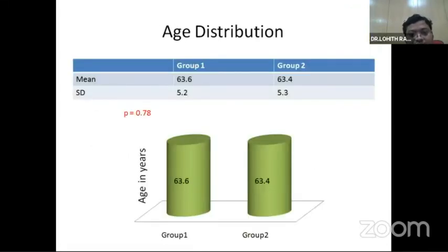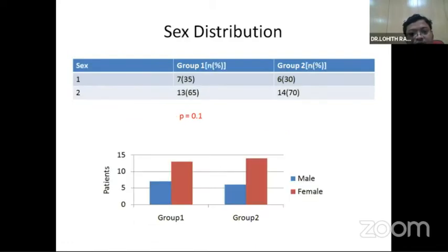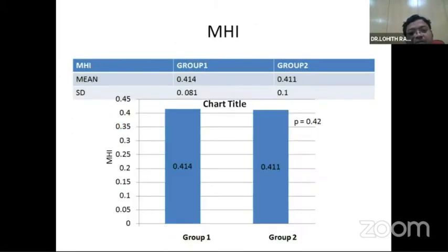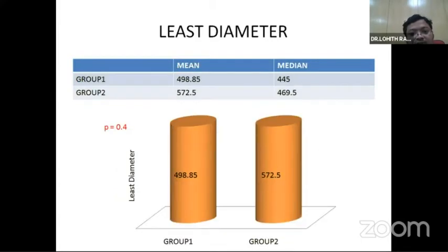Age distribution was matched: mean age was 63 in group 1 and 63.4 in group 2. Macular hole was more common in females. Duration of symptoms was matched at 6.5 months in group 1 and 7.2 in group 2. Macular hole index was 0.414 in group 1 and 0.42 in group 2. Minimum linear diameter was 498 microns in group 1 and 416 in group 2.